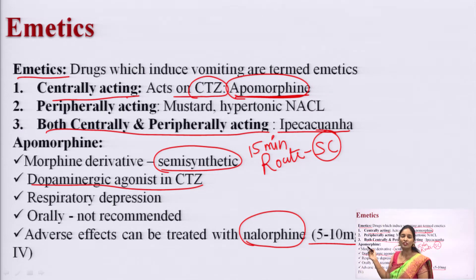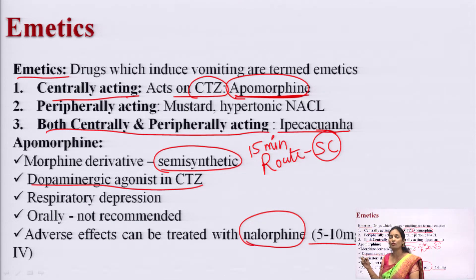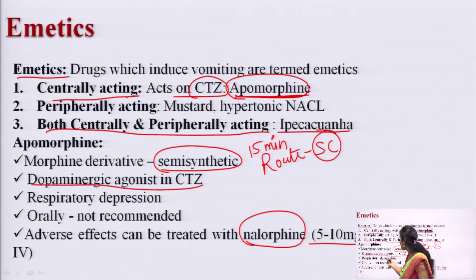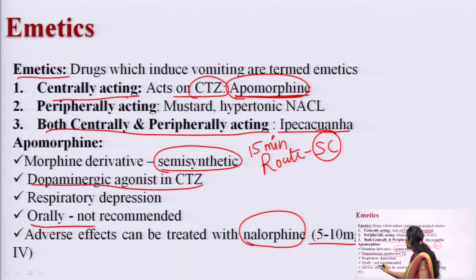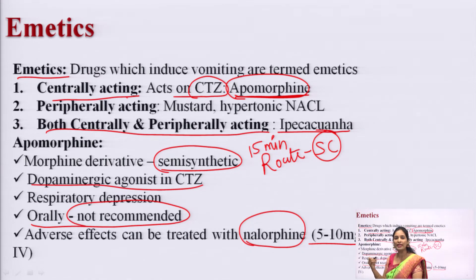Apomorphine is a semi-synthetic drug used to induce vomiting. It can be given by subcutaneous, intramuscular, or intravenous route. When given by subcutaneous or intramuscular route, within 15 minutes it shows emetic action. It is a very strong emetic drug. Orally it is not recommended. If the dose is increased, it can cause respiratory depression, which is treated by nalorphine at 5 to 10 mg.